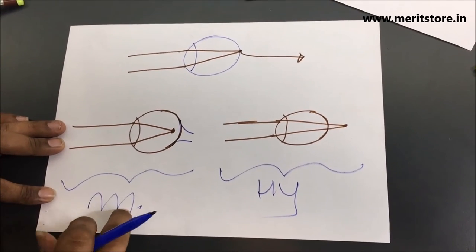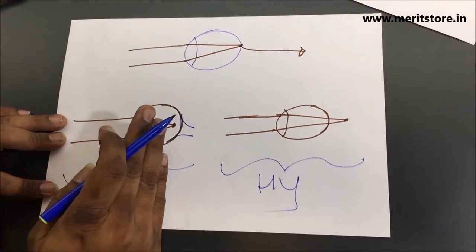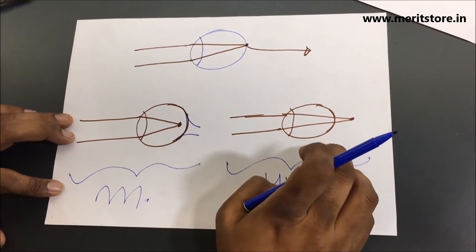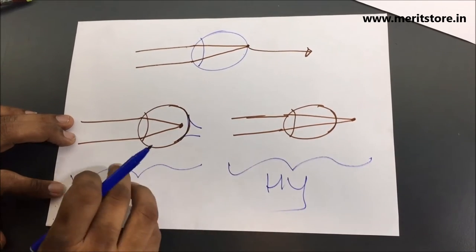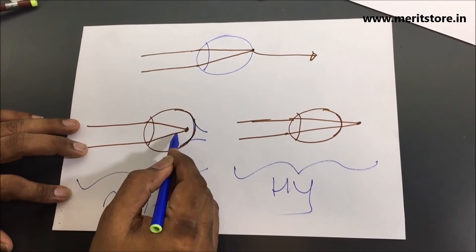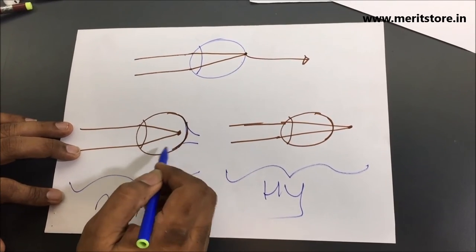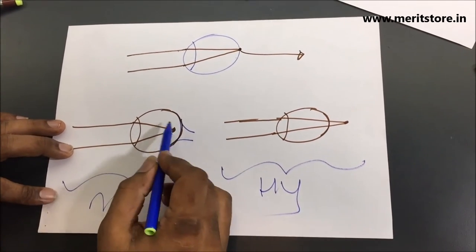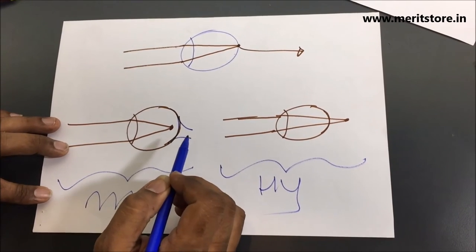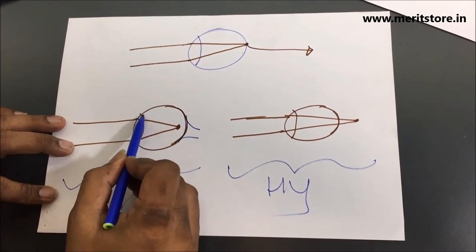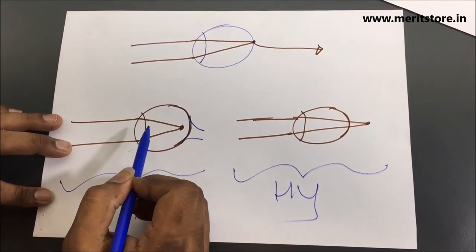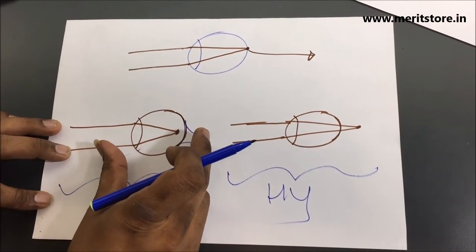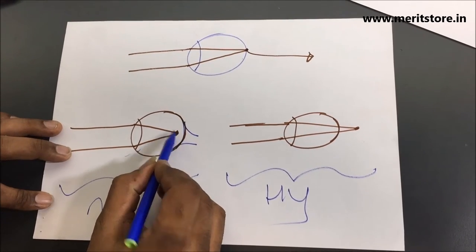In myopia, the person can see nearby things but cannot see distant objects clearly. The image is formed in front of the retina. This happens because the ciliary muscles do not relax properly and the eyeball gets elongated beyond normal size, which is why it converges the image in front of the retina.